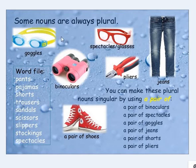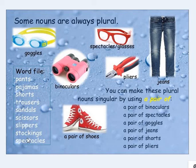Some nouns are always plural. For example: goggles, spectacles, glasses, binoculars, pillars, jeans, shoes, pants, pyjamas, shorts, trousers, sandals, scissors, slippers, stockings. We also say: a pair of binoculars, a pair of spectacles, a pair of goggles, a pair of jeans, a pair of shorts, a pair of trousers.